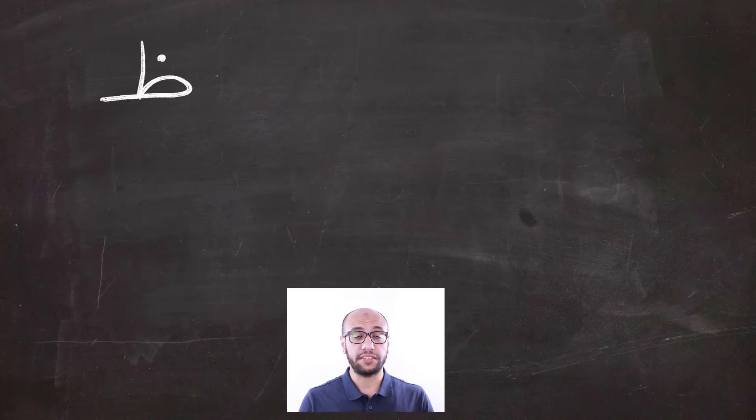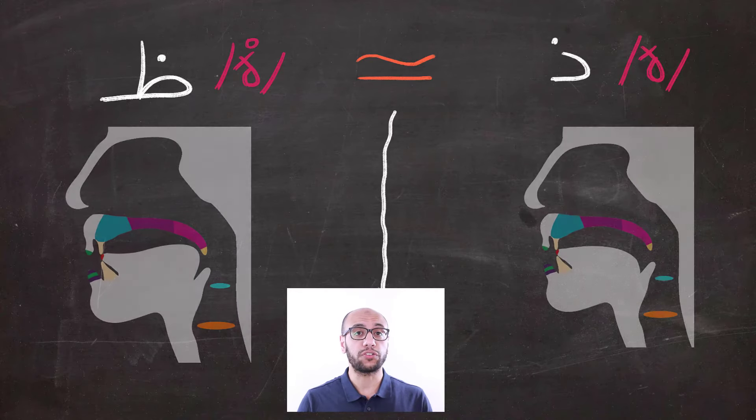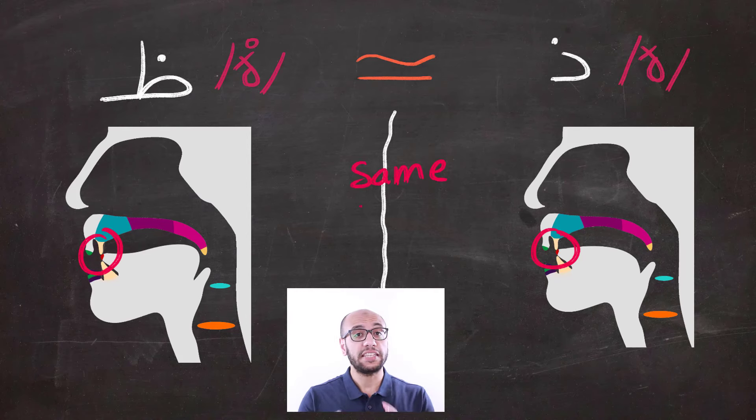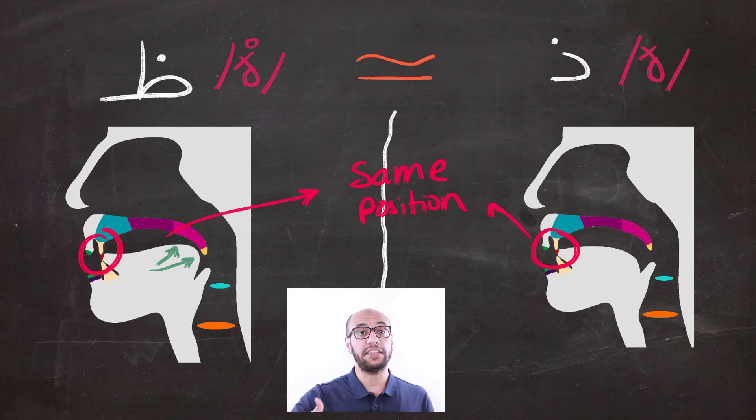Last but not least is the th sound, and th is very similar to the th sound, and that's why a lot of learners mix them up together. The similarity between them is that the tip of the tongue is in the exact same position, and that is between the front teeth. But the back of the tongue, when it comes to the th sound, is raised and is even stretching closer to the back of the mouth.